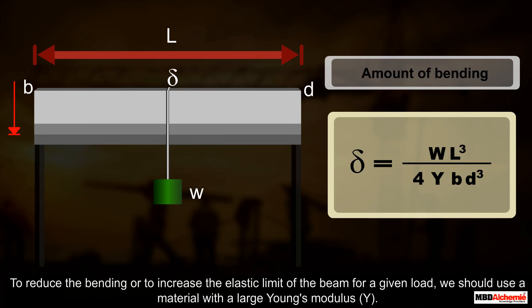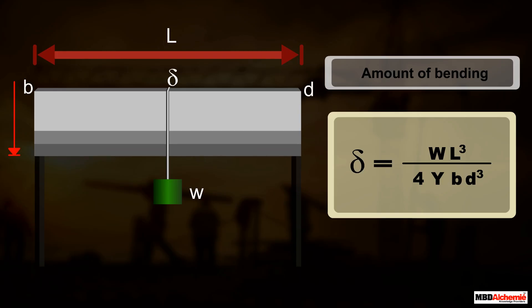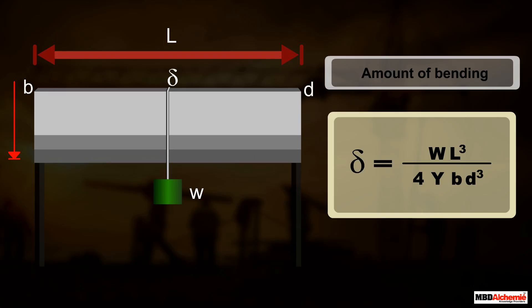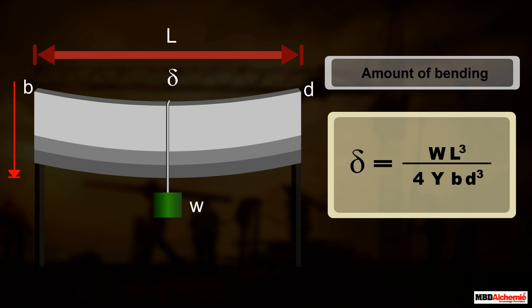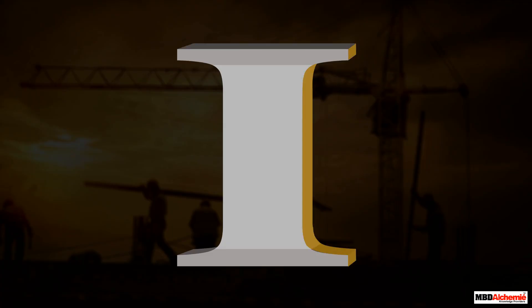In the formula, Y is the Young's modulus of the material. To reduce bending or increase the elastic limit for a given load, use a material with a large Young's modulus Y. For a given material, increasing the depth D can reduce bending greatly, but increasing depth too much may cause the bar to bend sideways — this is called buckling.